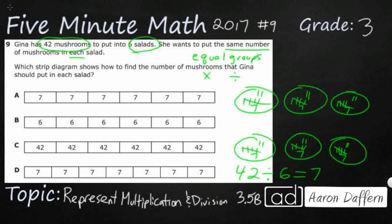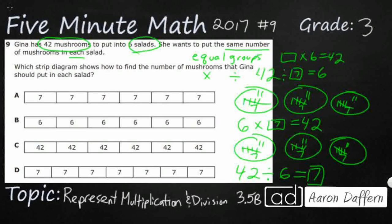Some of you might have known that fact, and you might have thought to yourself: 6 times how many equals 42? That would have worked if you knew that the answer is 7. That would have given you at least the beginning of an answer. And there are also two other related facts — one multiplication, one division. We could also write: unknown times 6 equals 42. So how do we turn that into one of these strip diagrams?